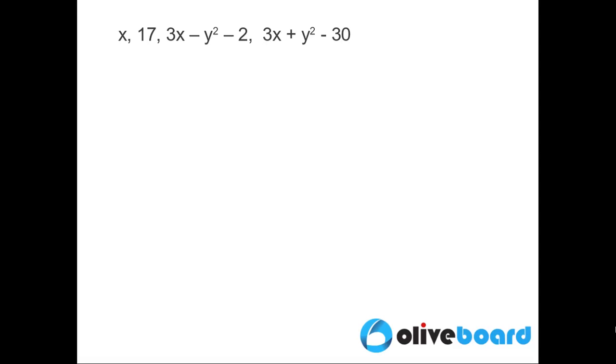The four terms given in the question are x, 17, 3x - y² - 2, and 3x + y² - 30.